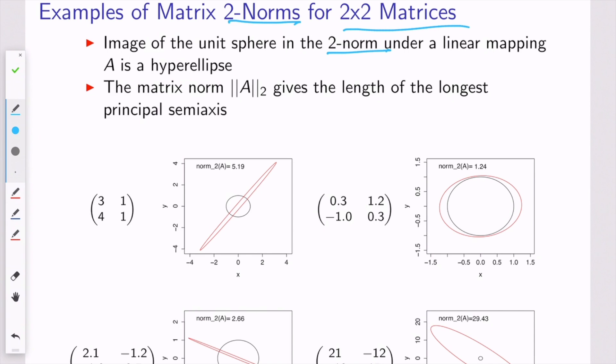And so the matrix norm, it turns out, gives us the length of the longest principal semi-axis, and you can see some examples here down below. You're welcome to pause the video and just peek at those. But the longest principal semi-axis is like the distance from here to here.